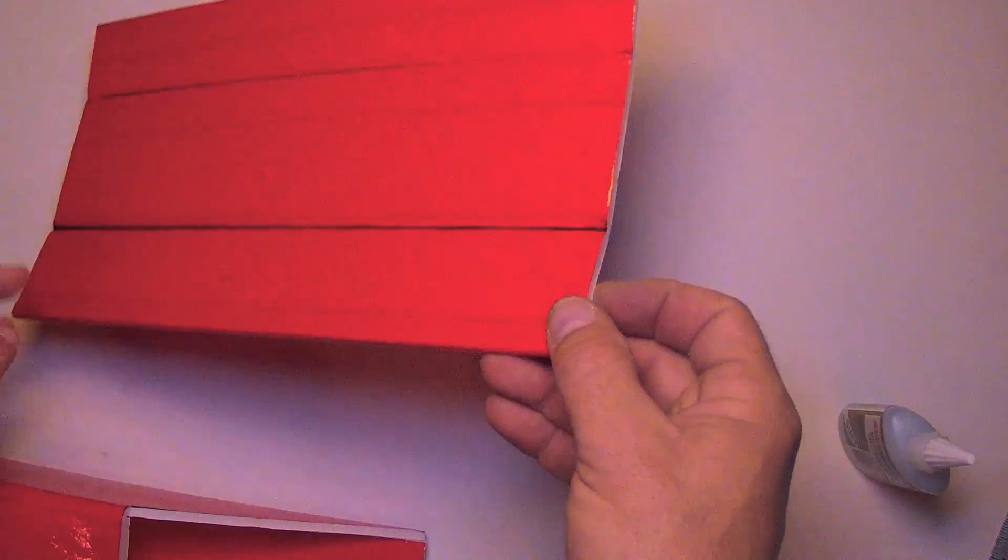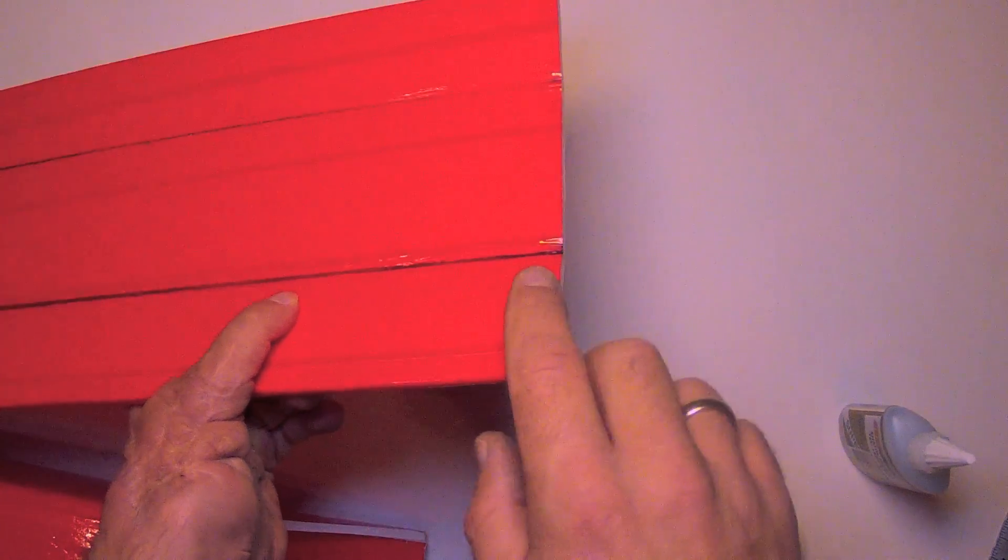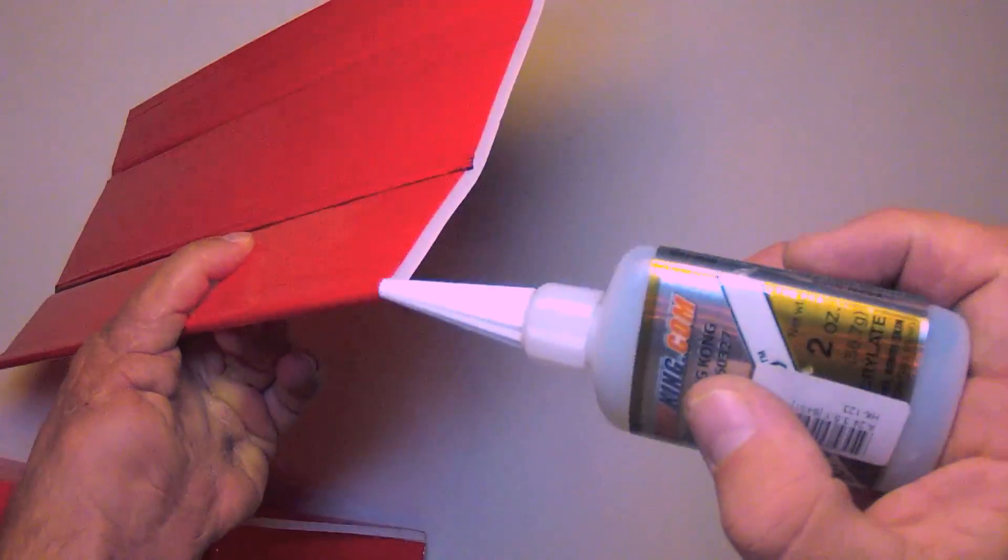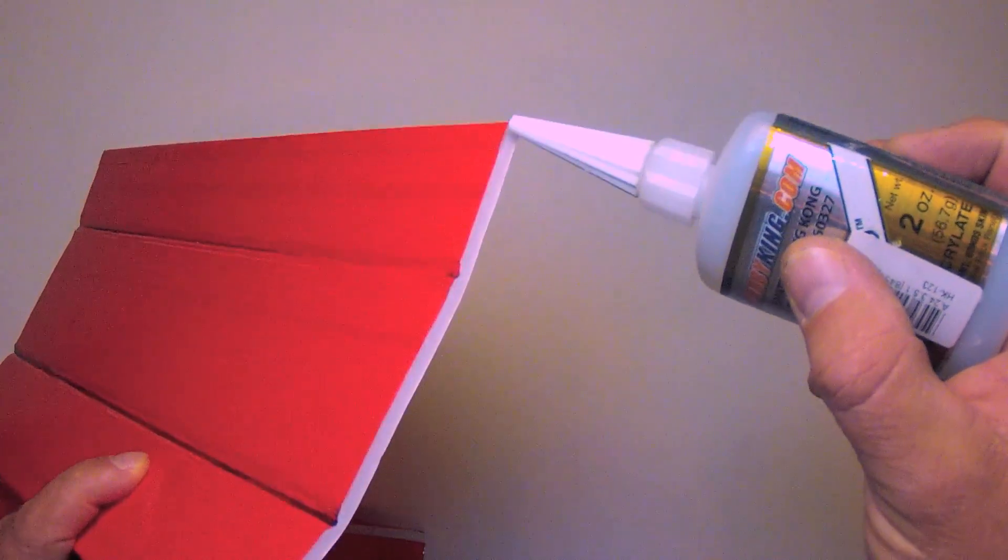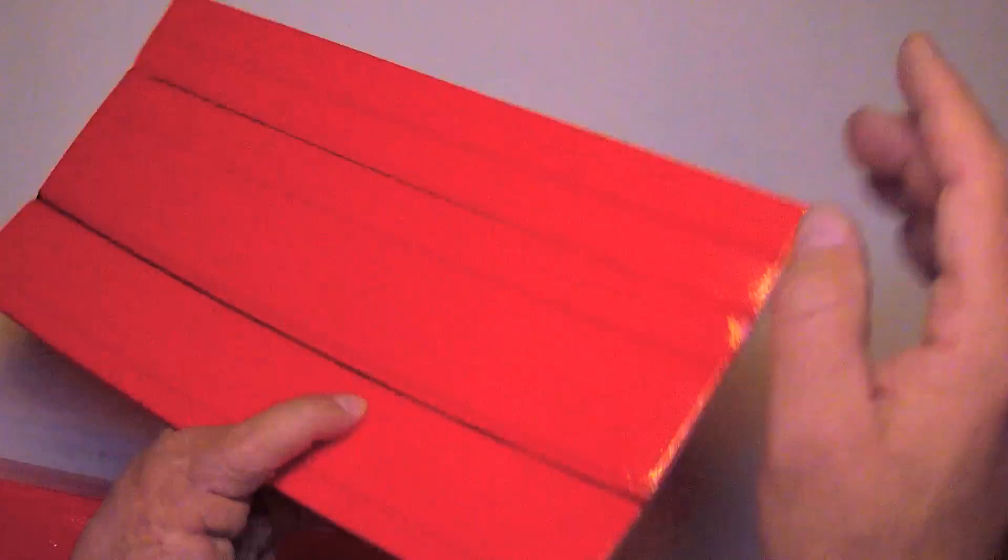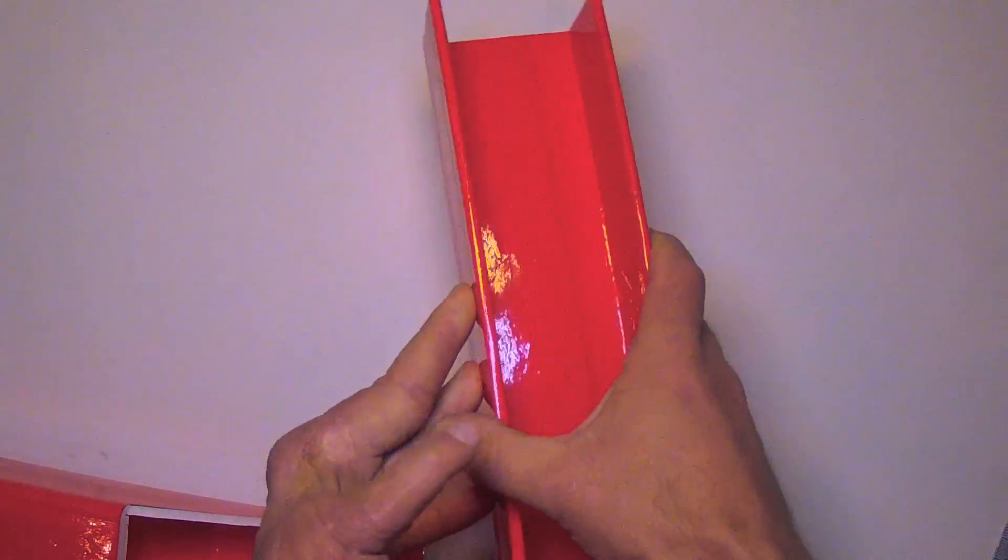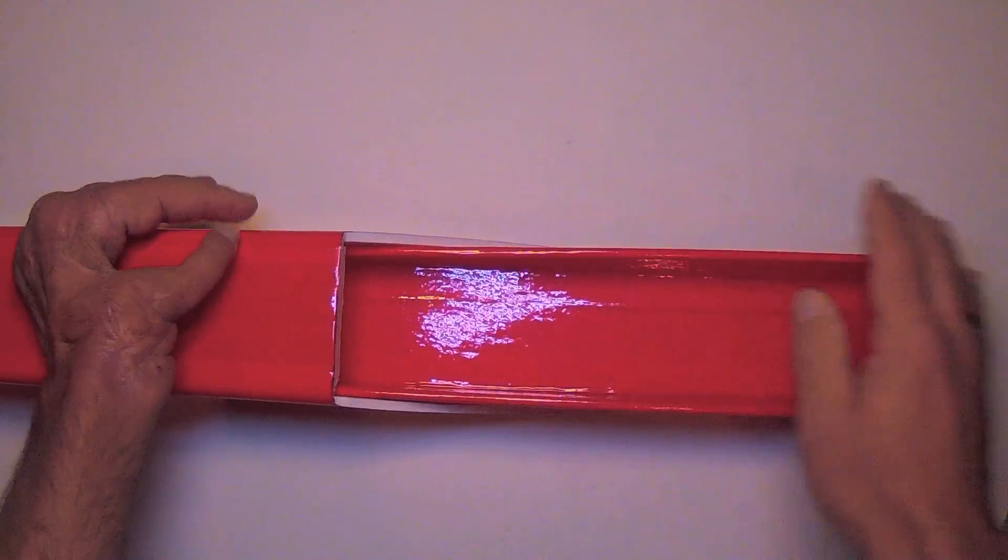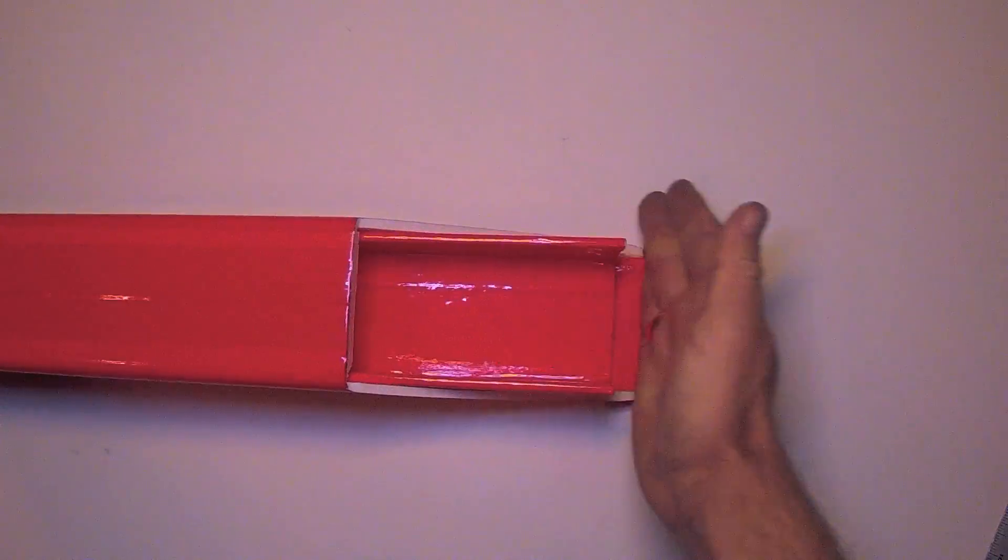You can also use the same method on the ends, or just use some tape. Or what I like to do is use some thin, foam-safe CA glue to be applied right along the edge there, just to toughen that up. And in any case, when you're done, you can fold that up and slide it right into your fuselage, like that.